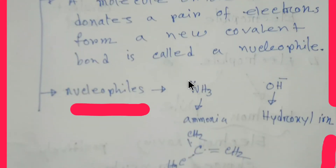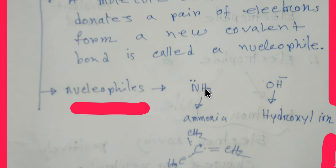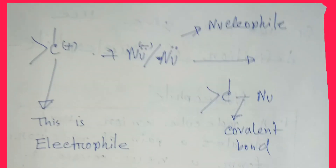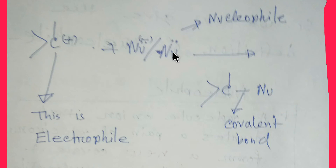This is called a nucleophile. Now we'll see some examples. Here is ammonia — this nitrogen has a lone pair of electrons, so ammonia is a nucleophile. Here is the hydroxyl ion, which also has a lone pair of electrons, so it is a nucleophile. Also remember that molecules with a double bond act as a nucleophile — the pi electrons here act as the nucleophile.